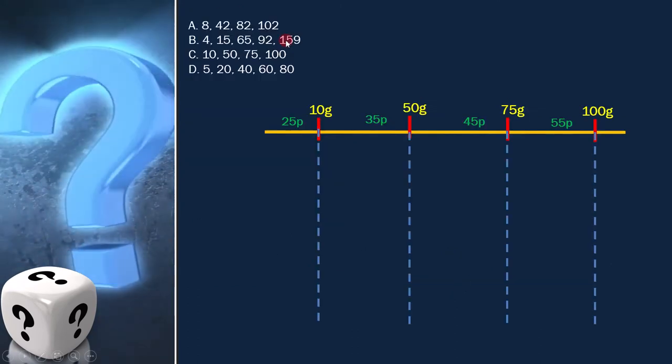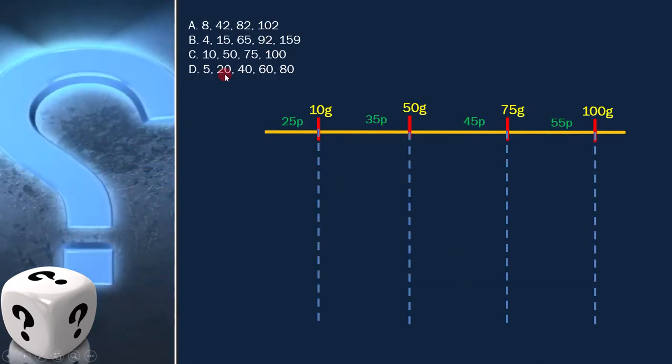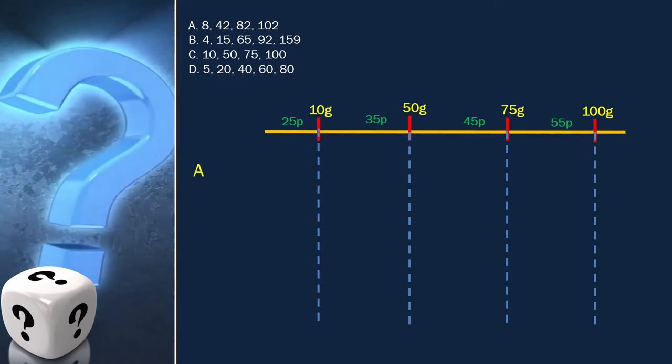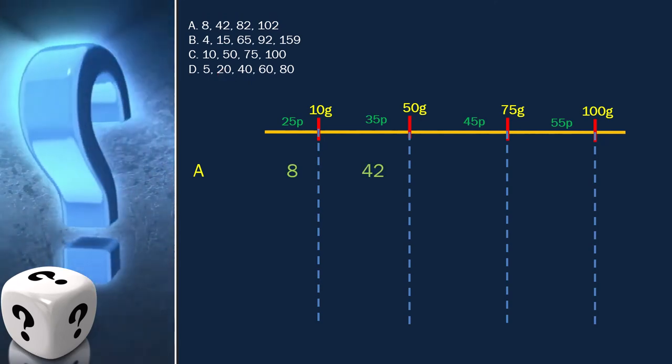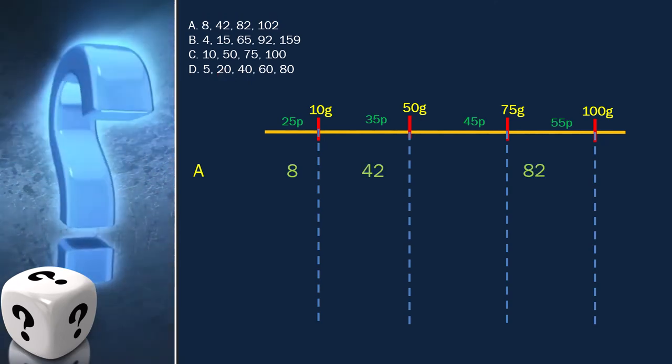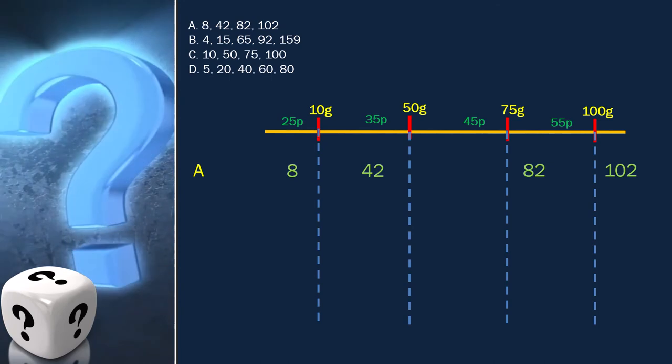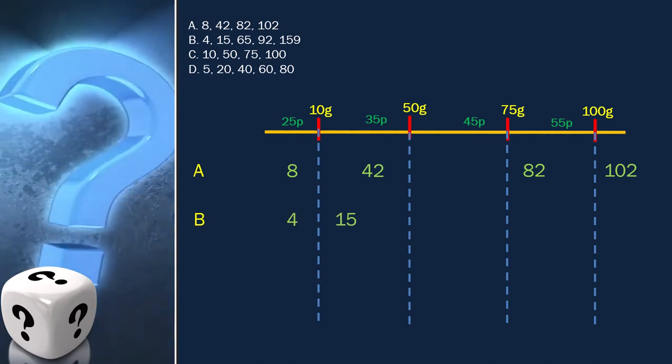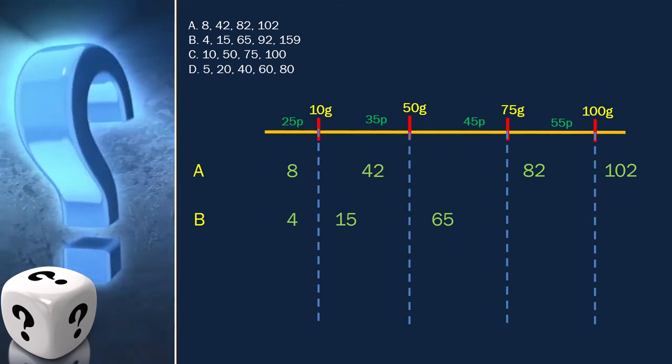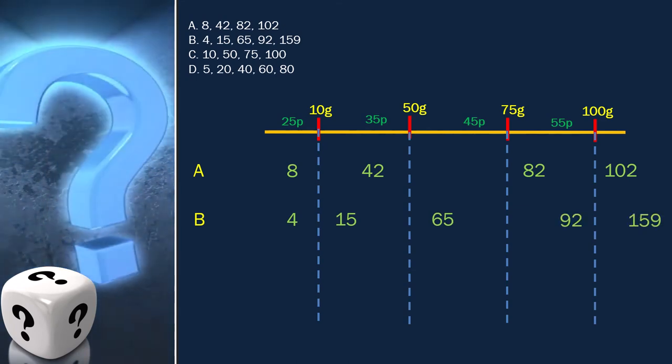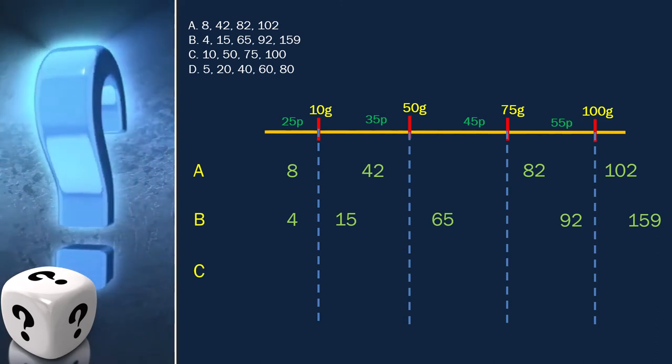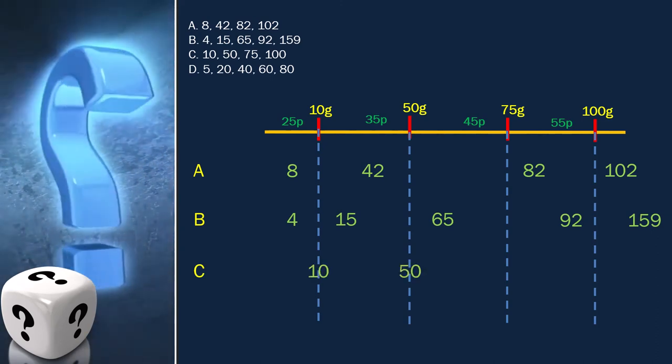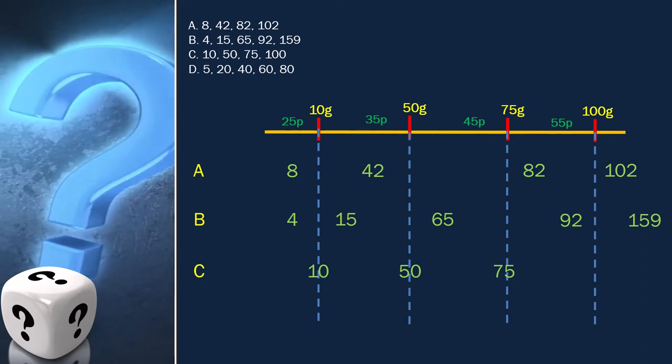Now let's analyze the options one by one. Option A is 8, 42, 82, 102. Option B is 4, 15, 65, 92, 159. Option C is 10, 50, 75, 100.